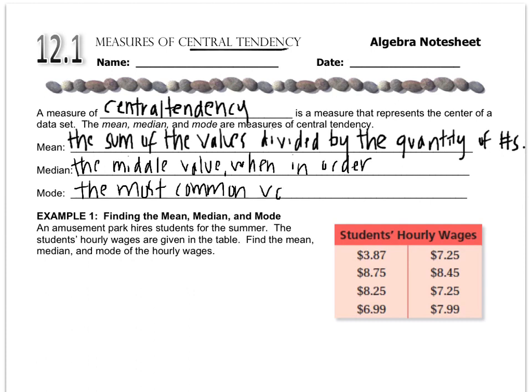And the mode is the most common value. There could be more than one mode. There could be two modes, three modes, four modes. There could be no mode. If every number shows up the same amount of times, then there's no mode.